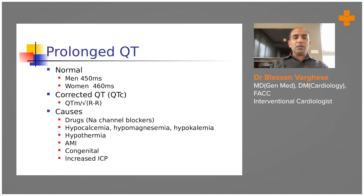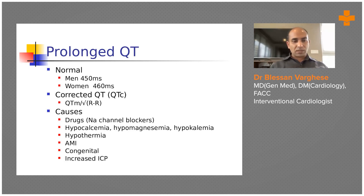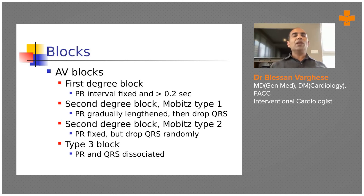Prolonged QT is seen in conditions such as drug effects, electrolyte disturbances — most commonly hypokalemia and hypocalcemia — ischemia, myocardial infarction, congenital long QT syndromes, and increased intracranial pressure. This is important when analyzing an ECG.